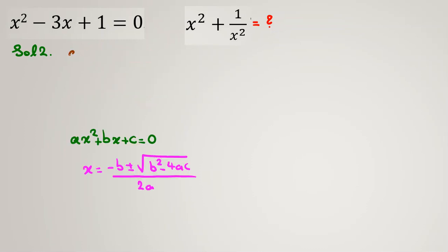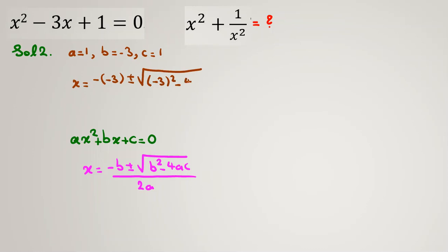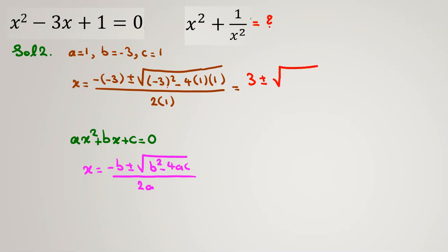In our equation, a equals 1, b equals negative 3, and c equals 1. Substituting: x equals negative(negative 3) plus or minus square root of (negative 3 squared minus 4 times 1 times 1), all over 2 times 1. Simplifying: x equals 3 plus or minus square root of (9 minus 4), all over 2, which is 3 plus or minus root 5, all over 2.